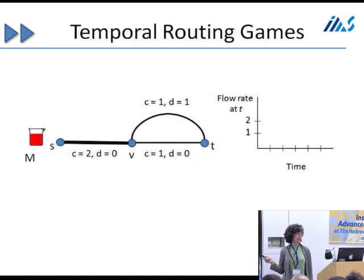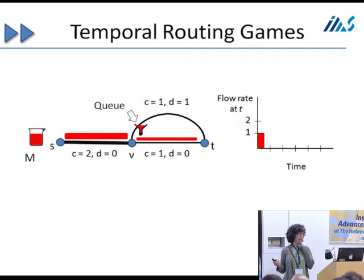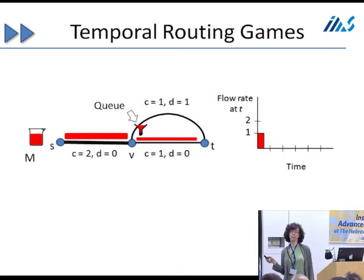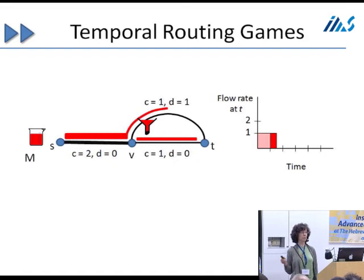Here's a simple network that's a bit more interesting than a single link. The capacities and delays are given for each edge. Initially there's a delay-zero path, so users take this path, but there will be more users on it than the second link's capacity of 1 can handle, since the first link has capacity 2. So users on the first link form a queue at the second link. They prefer this bottom link because it has delay zero, while the top link has delay one. Over time this queue grows, and eventually the top link starts to look attractive because the queue delay on the bottom link equals the delay of the top link.